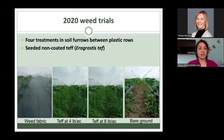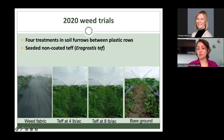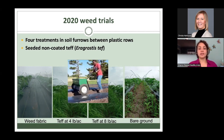For 2020, we tested four different treatments in the soil between the plastic rows. We had a weed fabric treatment, then we tested TEF — a non-coated TEF at two different densities — at four pounds per acre and at eight pounds per acre, because we didn't know which density was best for our system. The fourth treatment was bare ground. TEF was planted with a Gandhi seeder the same day as transplanting.